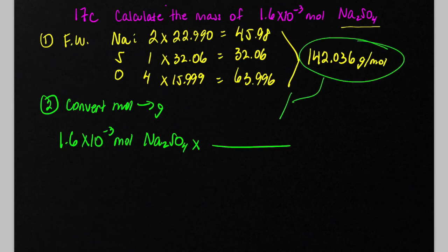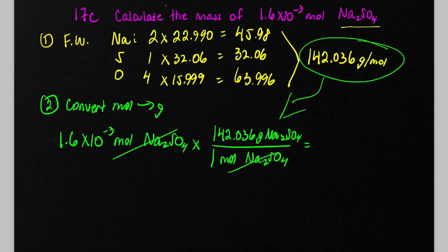And we want to then use the formula weight as our conversion factor. So on top, we're going to have 142.036 grams of sodium sulfate divided by one mole of sodium sulfate. And the moles of sodium sulfate cancels.